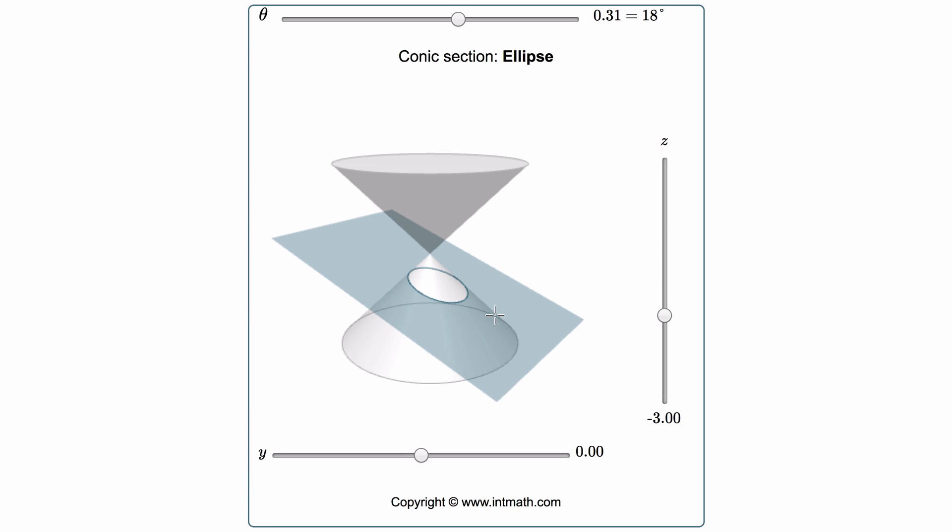Today we're going to look at the four different conic sections. Conic sections are formed from a right circular cone. It's a circular cone because it has a circular base, and we call it a right cone because the axis, the vertical line that goes through the vertex, is perpendicular to the base, forming a right angle.